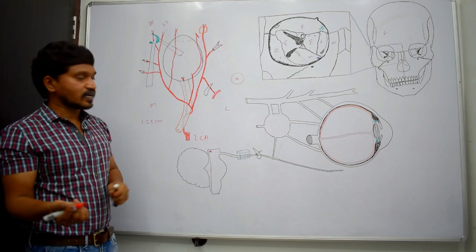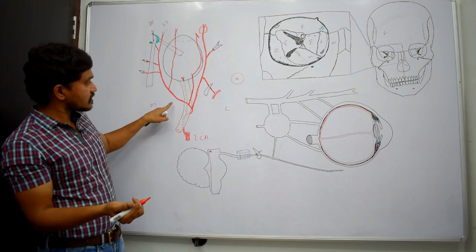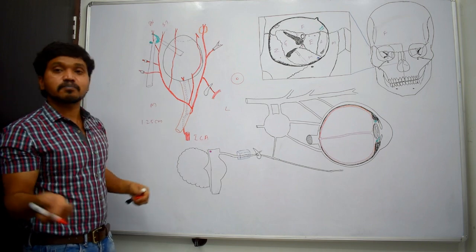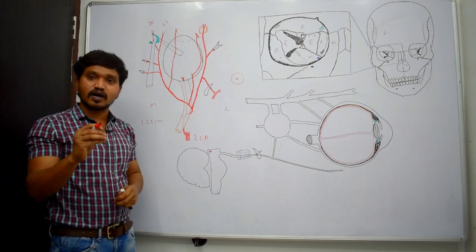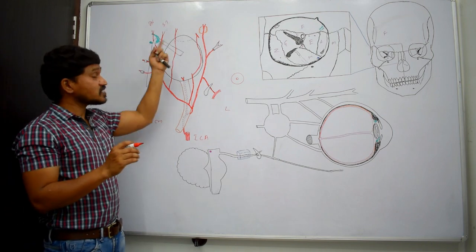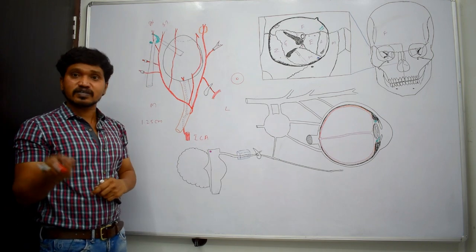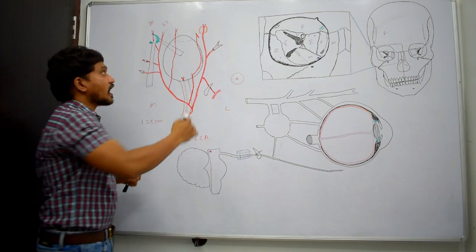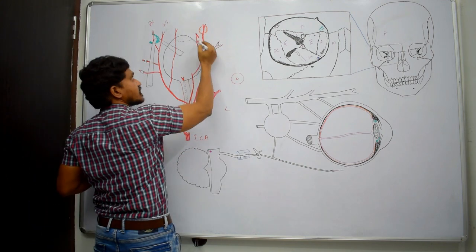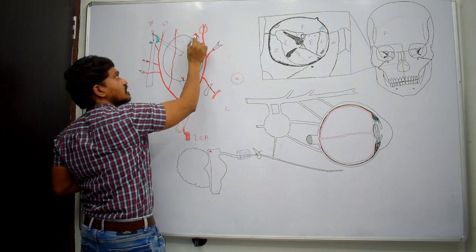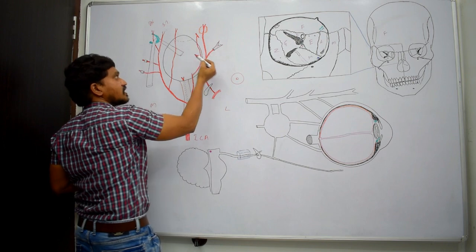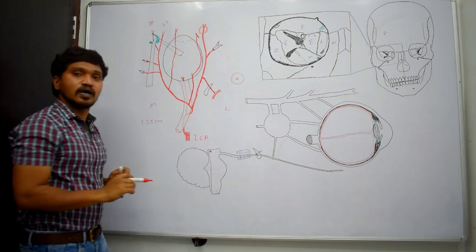Anterior ciliary arteries are not direct branches from the ophthalmic artery; they are branches from the muscular branches that supply the extraocular muscles. From those blood vessels, the anterior ciliary arteries arise. From the muscular branch, the anterior ciliary artery arises and supplies the eyeball.